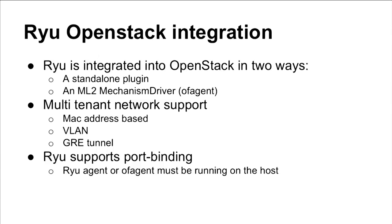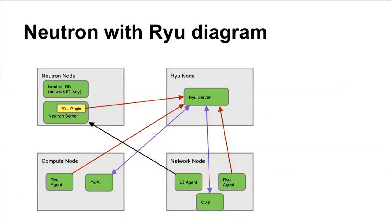The Ryu OpenFlow agent supports standard multi-tenant networks using MAC address-based tenant network segregation via OpenFlow rules, as well as VLANs and GRE tunnels. It also supports the port binding extension in ML2. The architecture shows a Ryu node running the Ryu server, a Neutron node with the Ryu plugin, a compute node with a Ryu agent talking locally to OVS, and a network node with another Ryu agent handling L3 and DHCP services.